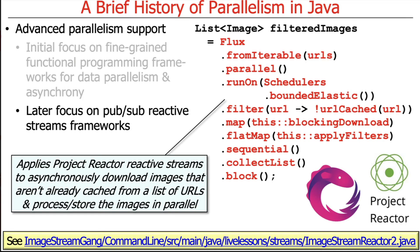One notable feature of modern asynchronous programming in Java is that it looks relatively linear in the programming abstraction even though processing is taking place concurrently or in parallel. The code uses a fluent interface model of chaining operators together, and as each step completes, the next operator in the chain is called back automatically to process the result. It takes a while to get your head around, but it's really elegant.